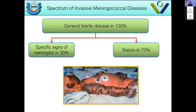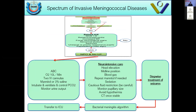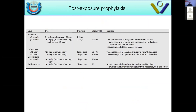Of 100 patients developing general febrile disease due to Neisseria meningitidis, 30% will end up with meningitis and 70% with sepsis. We need to be very aggressive and quick with antibiotics, fluids, and other medications. For chemoprophylaxis of contacts, we can use rifampicin, ceftriaxone, ciprofloxacin, or azithromycin — all are effective as chemoprophylaxis for contacts of Neisseria meningitidis patients.